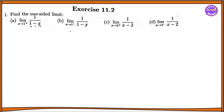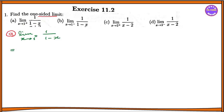We are going to the next level of Exercise 11.2, Number 1. We are going to find one-sided limits using parts 3 and 4. The first thing we choose is whether to find a left-hand limit or right-hand limit. For the right-hand limit, x tends to 1 plus, we look at 1 by 1 minus x.